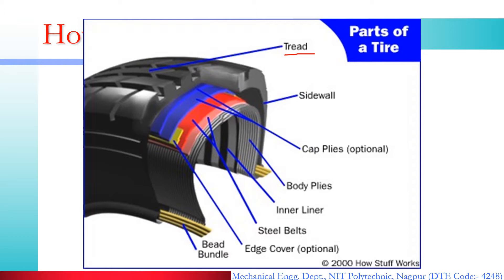Now let's see how the tire is built and manufactured. Basically, it has different parts. If you look at the tire, it has a tread which provides the grip, an outer wall called the sidewall, and an inner wall. The tire has a number of components. Here you can see the plies: cap plies, body plies, inner liner, steel belts, edge cover, and bead bundle.